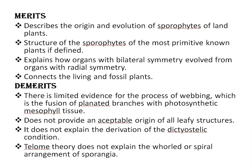Regarding the merits and demerits of telome theory: among the merits, this theory describes the origin and evolution of the sporophyte of land plants; the structure of the sporophyte of the most primitive known plants is defined with the help of telome theory; it explains how organs with bilateral symmetry evolved from organs with radial symmetry; and it connects living and fossil plants. Demerits include limited evidence for the process of webbing, which is the fusion of planated branches with photosynthetic mesophyll tissues. It does not provide an acceptable origin of all leafy structures, does not explain the derivation of the dictyostelic condition, and does not explain the whorled or spiral arrangement of sporangia.